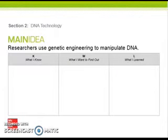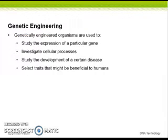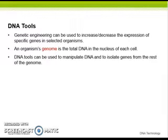This is chapter 13 section 2. The main idea is that researchers use genetic engineering to manipulate DNA. Genetic engineering involves manipulating the DNA of one organism in order to insert the DNA of another organism. The inserted DNA is also known as exogenous DNA. Genetically engineered organisms are used to study the expression of a particular gene, investigate cellular processes, study the development of a certain disease, or select traits beneficial to humans.